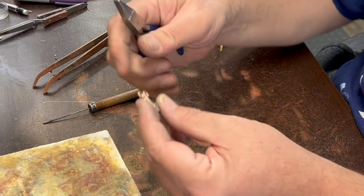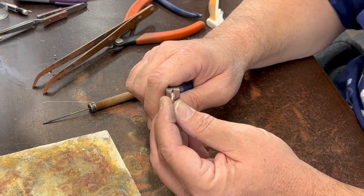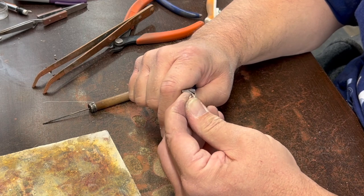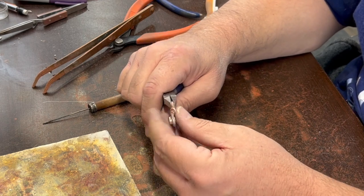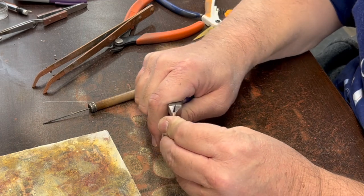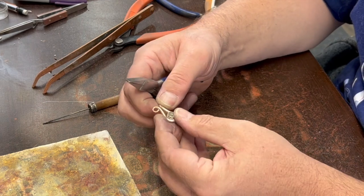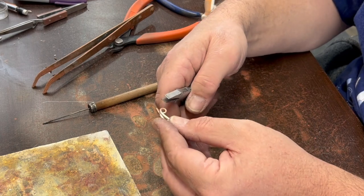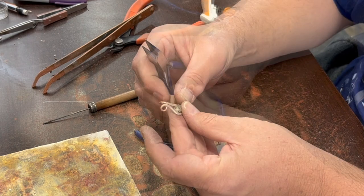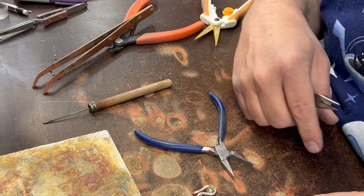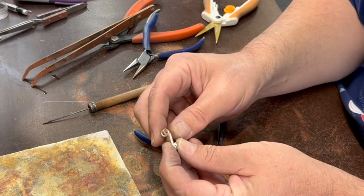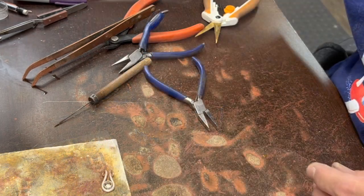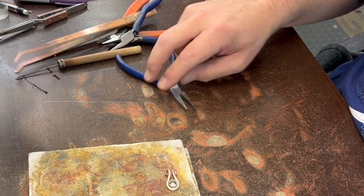The last bit before I pickle this is I'm just going to turn these and try to do it pretty consistently. Now it's got this kind of pathway for the chain to go through. We call that the bail if you're new to this. I'm going to go ahead and pickle that and then I'll come back and polish it and set the stone.